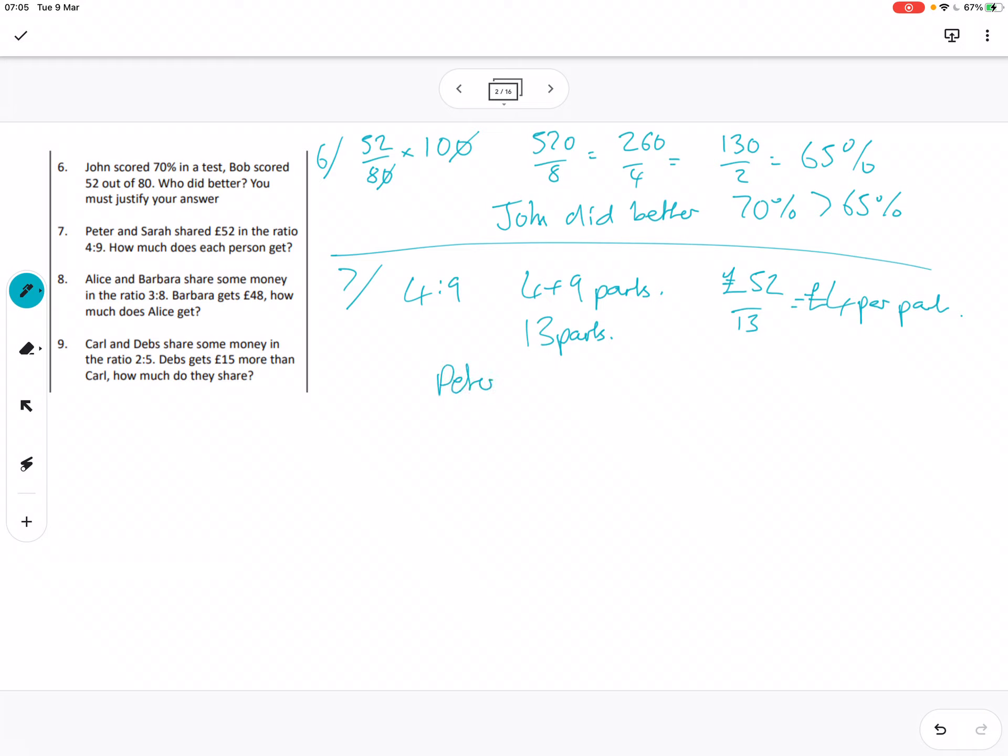And then I can just say, well Peter got 4 parts from here, the 4 times £4, so he got £16. And Sarah, she got 9 parts from the ratio, the 9 times £4, which is £36. Now just for confidence I'm going to add those numbers back up to, what is it, £52, and I get my original number. So that just gives me some confidence, but this is the answer.